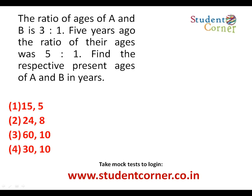The ratio of ages of A and B is 3 is to 1. So the ratio of the ages has been given: A to B is equal to 3 to 1. Five years ago — ago means past, so minus — the ratio of the ages was 5 is to 1. So five years ago it is A minus 5 and B minus 5, giving ratio 5 is to 1. Find the respective present ages of A and B.